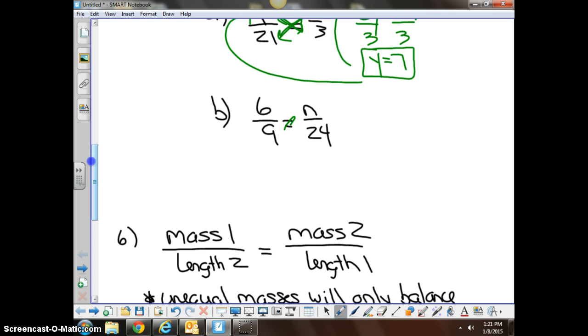So in letter B, I'm going to just take 9n as my first cross product, and set it equal to 6 times 24, which would give me 120, 144, I believe that would be.